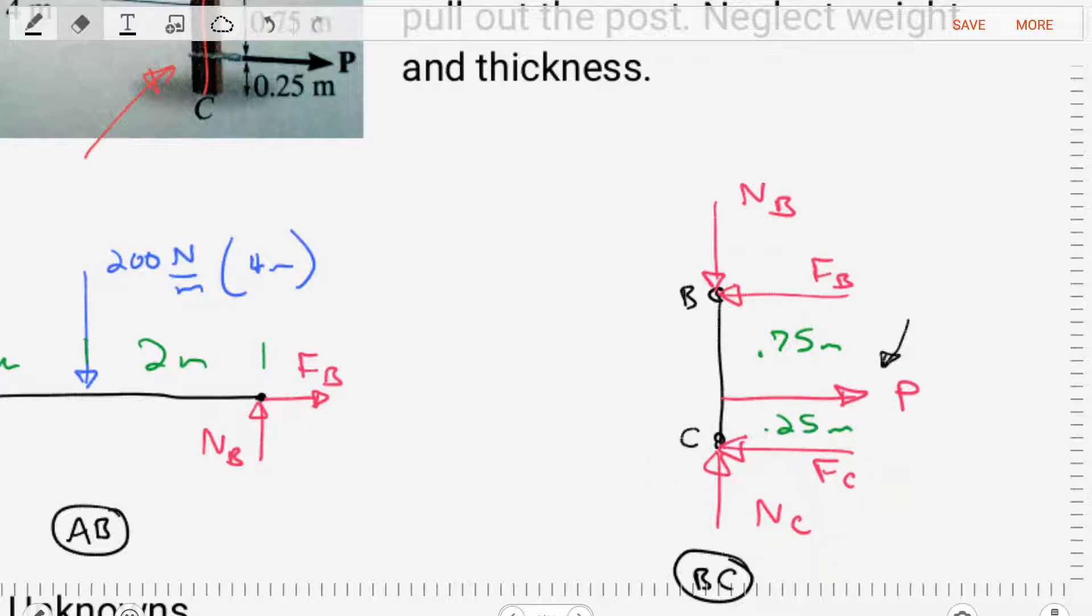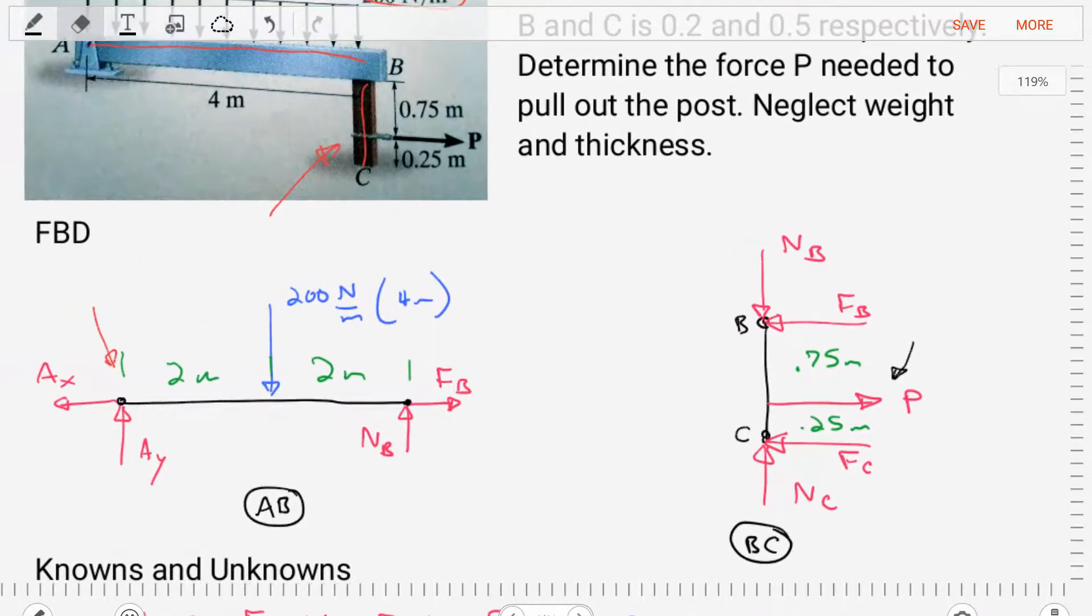Now looking at these diagrams, at both of them, we can see there's quite a bit of unknowns that we need to find. In the first diagram, there are four unknowns. In the second diagram, there are five unknowns. In both cases, we don't have enough equations of equilibrium to solve this problem. So we're going to need to add something.